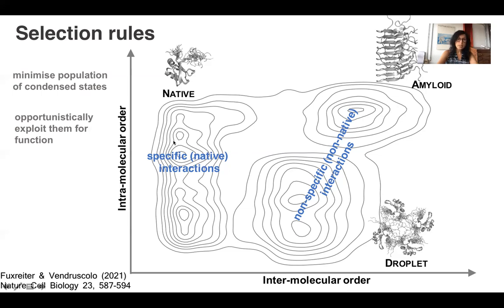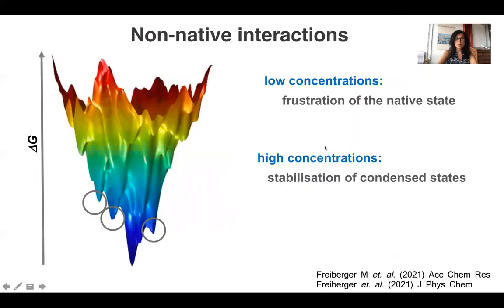So protein sequences should be evolved to stabilize native interactions favoring the native state, and minimize the population of non-native interactions. Within the energy landscape framework, these non-native interactions provide frustration to the native state at low concentrations. But at high concentrations, they basically stabilize the condensed state, and this should be exploited for all kinds of functionalities.